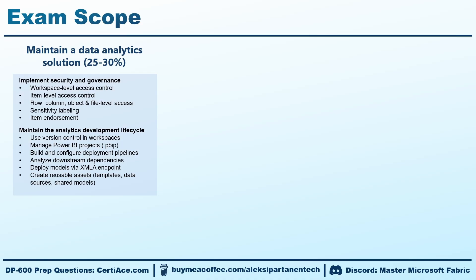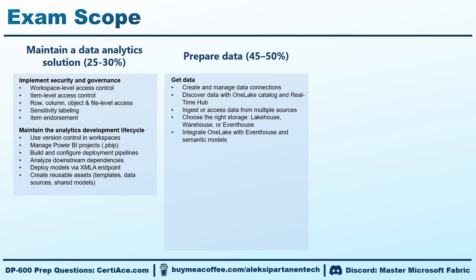Then we move to the second part of the exam: 'Prepare data'. This is the biggest section and roughly half of the exam questions will be about this section. You need to know how to create and manage connections to different data sources. You should also know how to find and explore data using OneLake Catalog and Real Time Hub, which help you quickly discover what data is already available. Then you will learn how to bring data by ingesting it or accessing it from multiple sources. It is also important to choose the right data store option — in Microsoft Fabric and the context of this exam, that could be a lakehouse, warehouse, or an event house, depending on your needs. And finally, you should understand how to integrate OneLake with event house and semantic models.